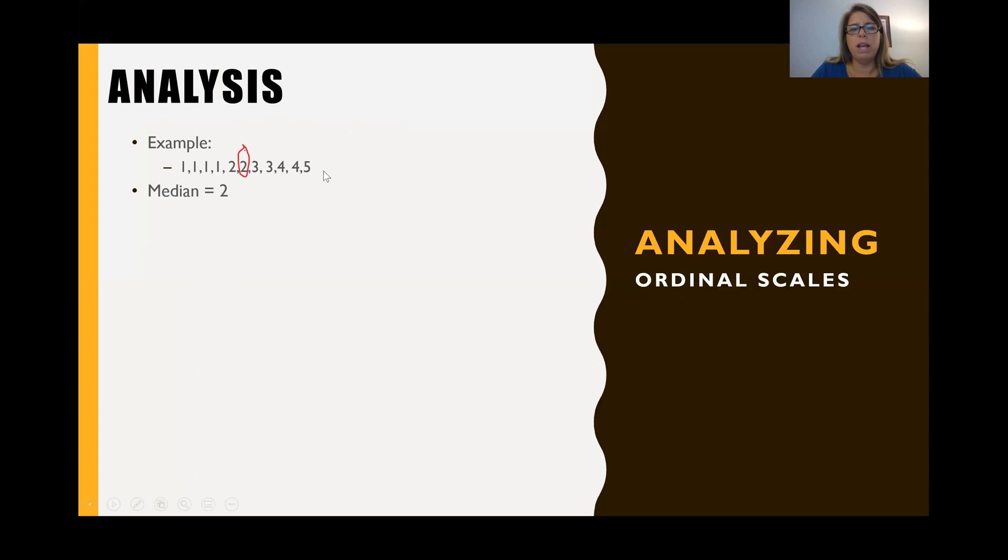Now, if there was an extra case and it was an even number, you would take the two numbers. So say we had another five down here, you would take these two numbers and you would divide by two to get the midpoint there. But because we have an odd number, we'll just simply take that very middle variable. So our median is two. Now our mode is one. One is what we have the most, the highest frequency for.